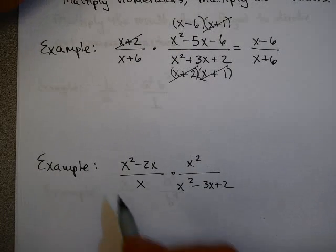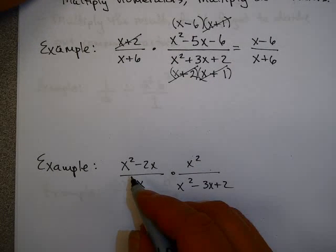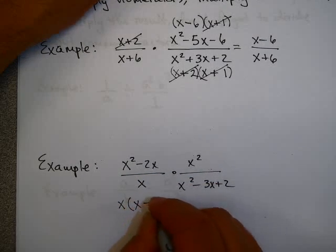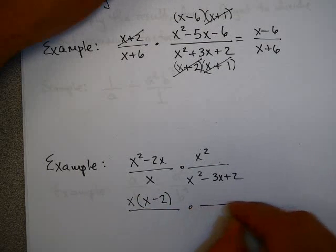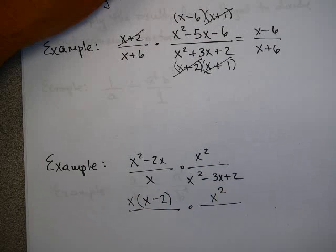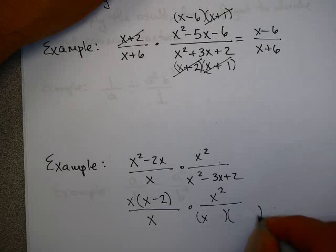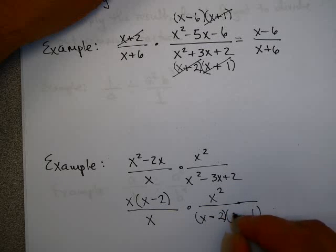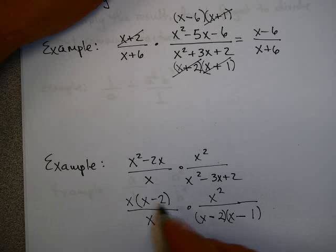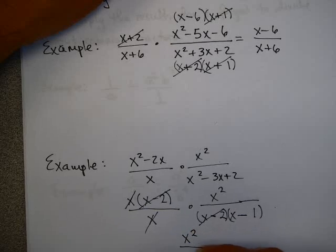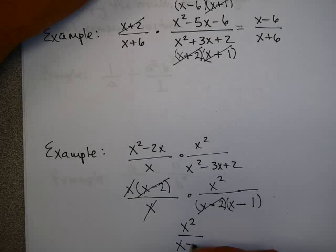Why don't you try this one on your own. I'm going to factor my numerators — this first one I can take an x out. The second one is just x squared, already factored. The first denominator is already factored. The second denominator I'm going to factor as a binomial with 2 and 1, and both of these are minus. These are factors now, so those will divide out, and x minus 2 will divide out. What's left is x squared over x minus 1, and I'm finished.